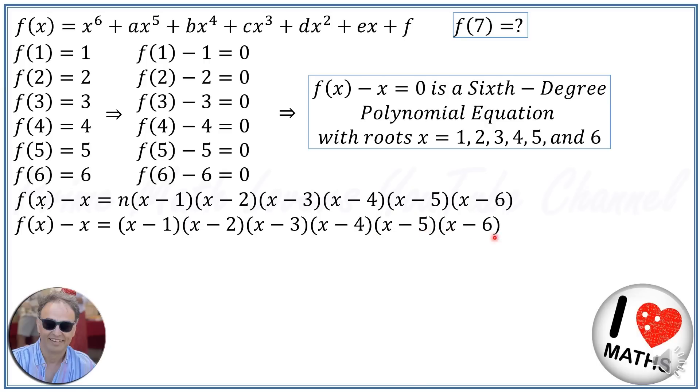Now we can calculate f(7). We put x = 7 in this equation, so we will have f(7) - 7 = (7 - 1)(7 - 2)(7 - 3)(7 - 4)(7 - 5)(7 - 6).